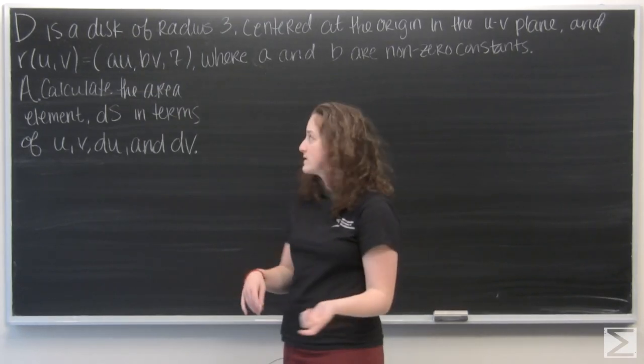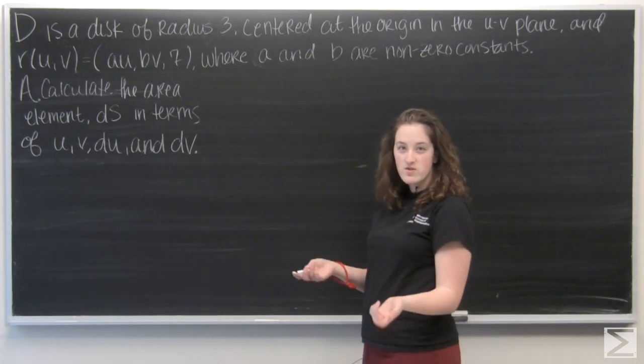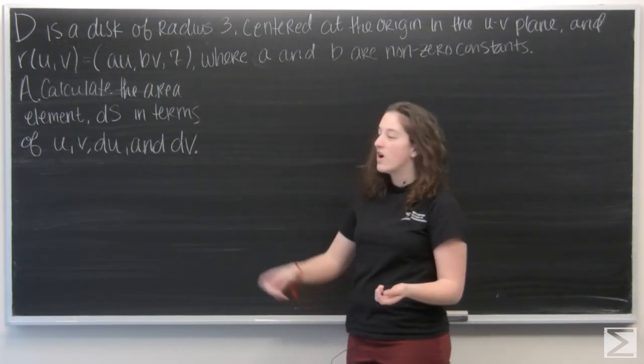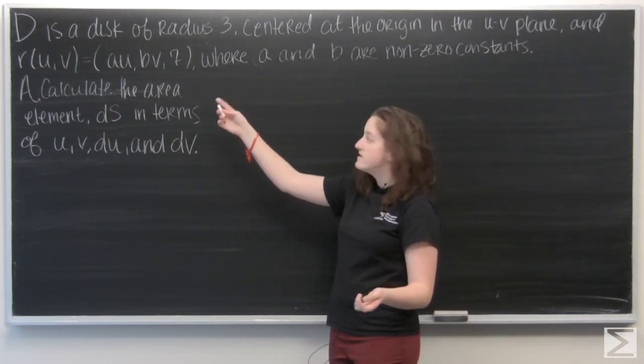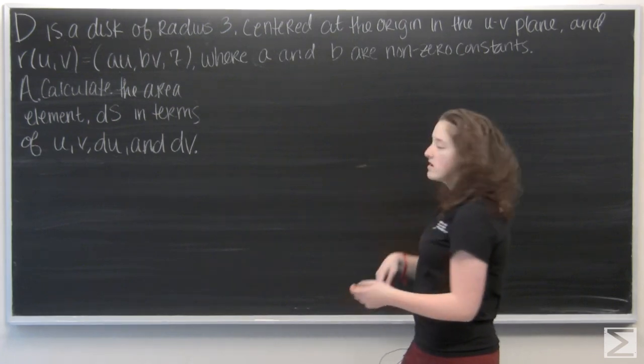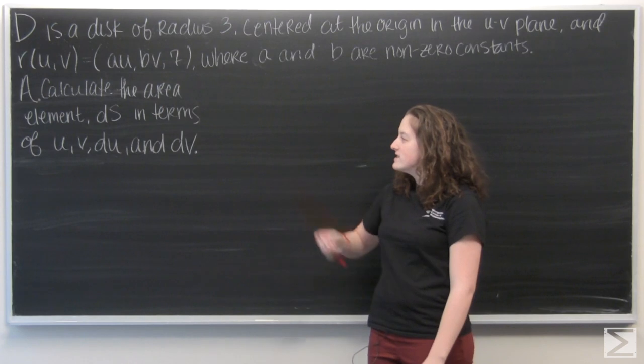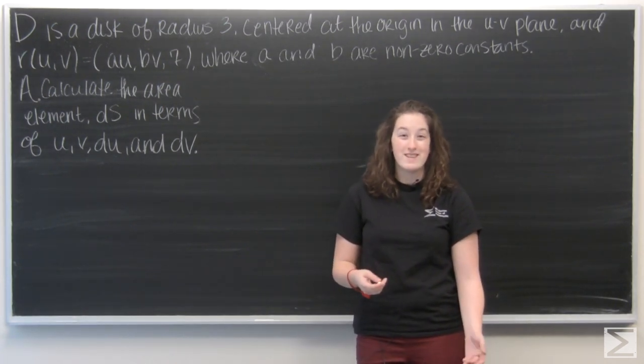Okay, so let's take a look at this question. D is a disk of radius 3 centered at the origin in the uv plane, where r of u and v is (au, bv, 7), where a and b are just non-zero constants. And part a asks us to calculate the area element ds in terms of u, v, du, and dv.